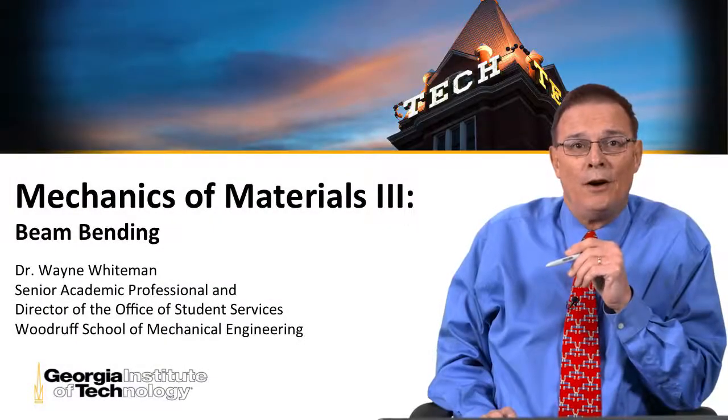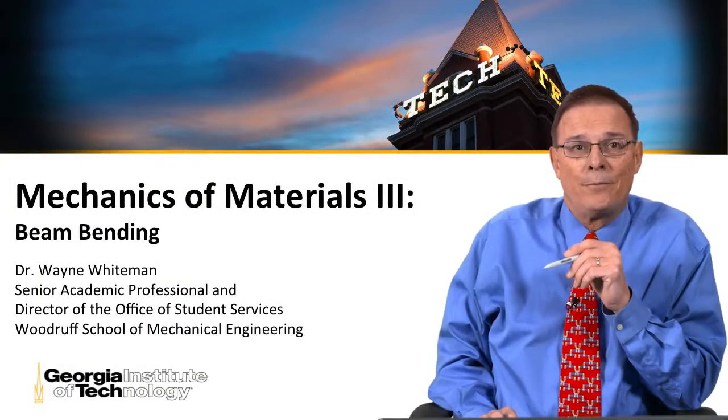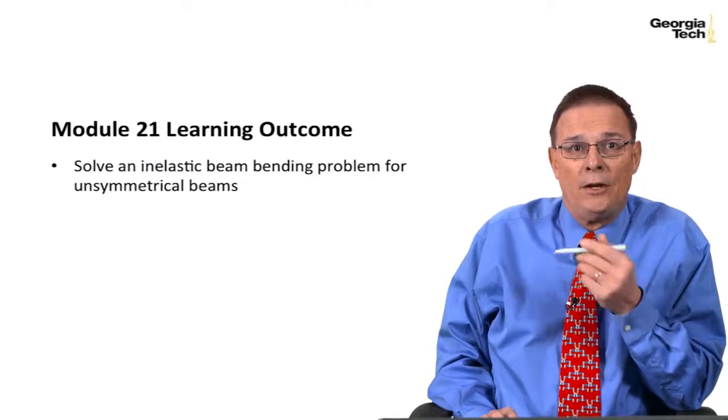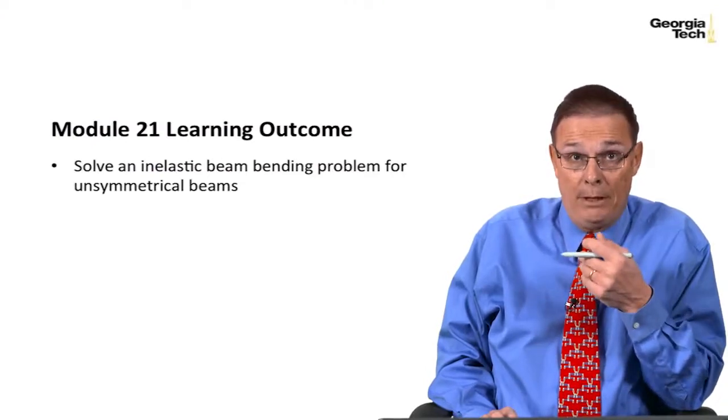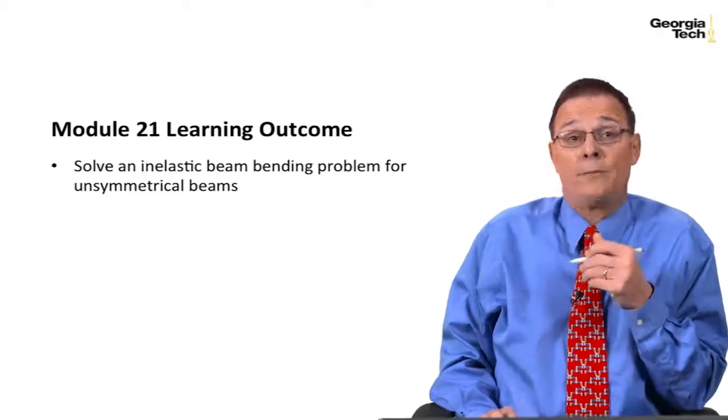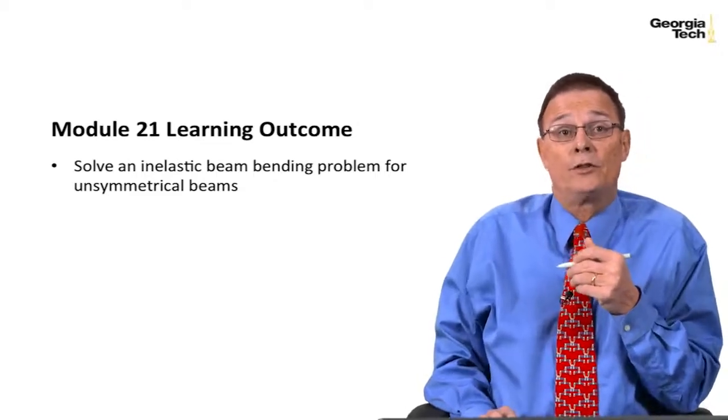This is Module 21 of Mechanics and Materials Part 3, and today's learning outcome is to solve an elastic beam bending problem for unsymmetrical beams. We've done it for symmetrical beams, now we're going to do it for unsymmetrical beams.